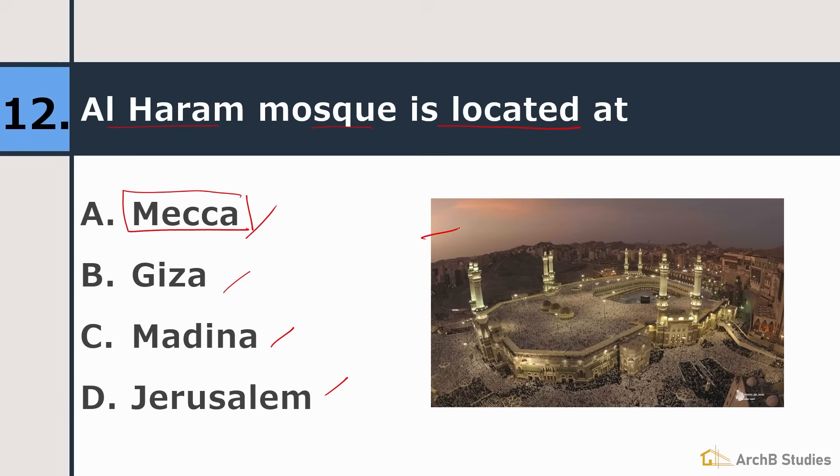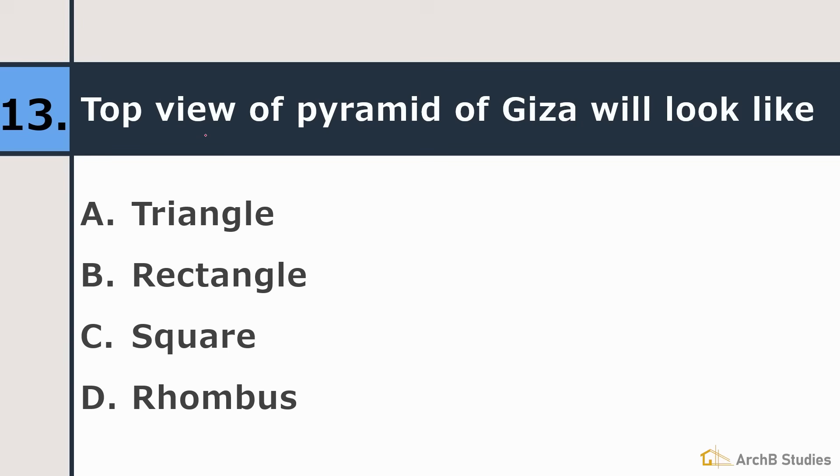So this is the Al-Haram Mosque. Top view of Pyramid of Giza will look like triangle, rectangle, square, or rhombus. So we know that pyramids are like this. This edge is hidden. If you see from the top, you will see this face. That is square. So square is the right answer.